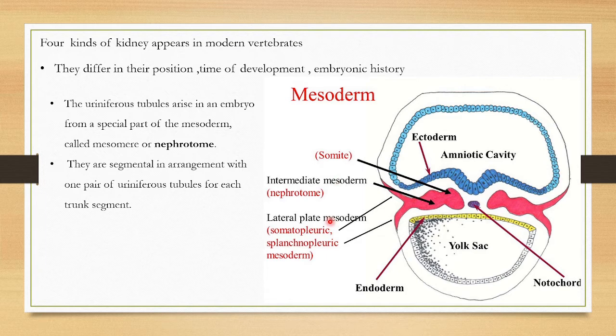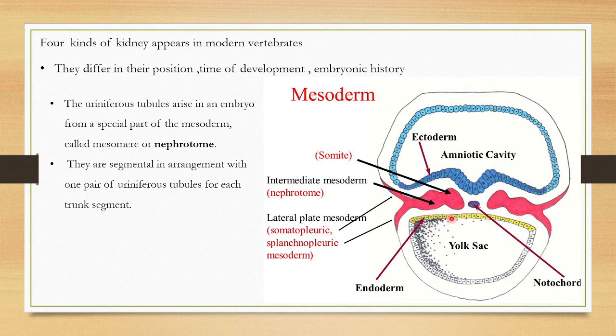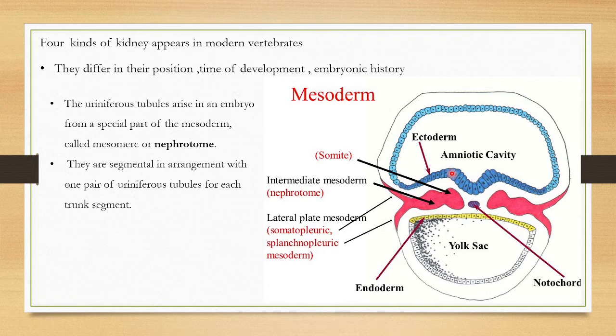In organogenesis from the gastrula, you can see the endoderm here, this middle layer is called the mesoderm, and the outer layer is called the ectoderm. This mesoderm has three regions: the somite mesoderm, the intermediate mesoderm, and the lateral plate mesoderm.